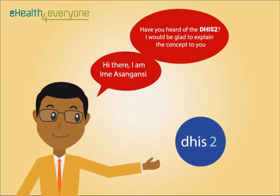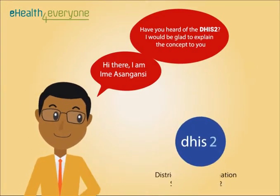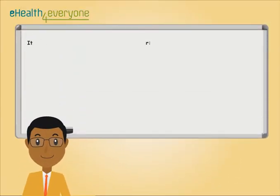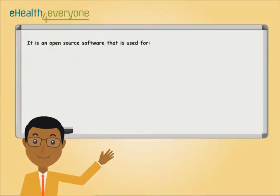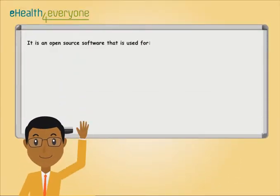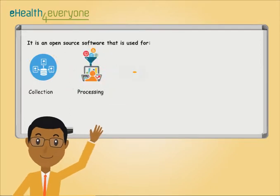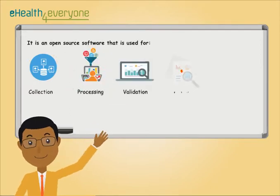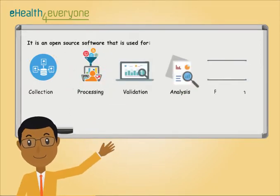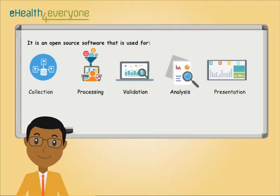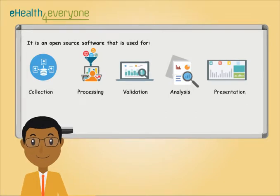DHIS-2 stands for District Health Information System Version 2. It is an open source software that is used for collection, processing, validation, analysis, and presentation of aggregate and patient-based statistical data.